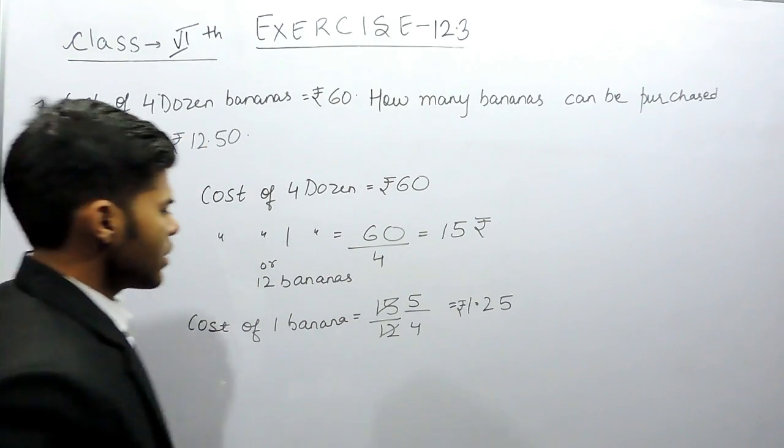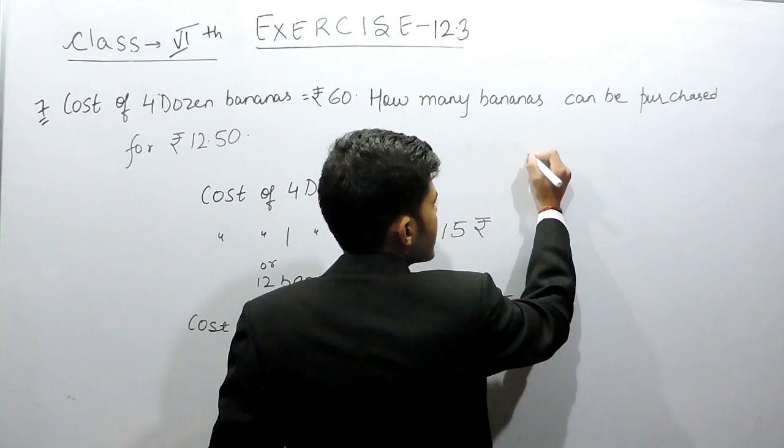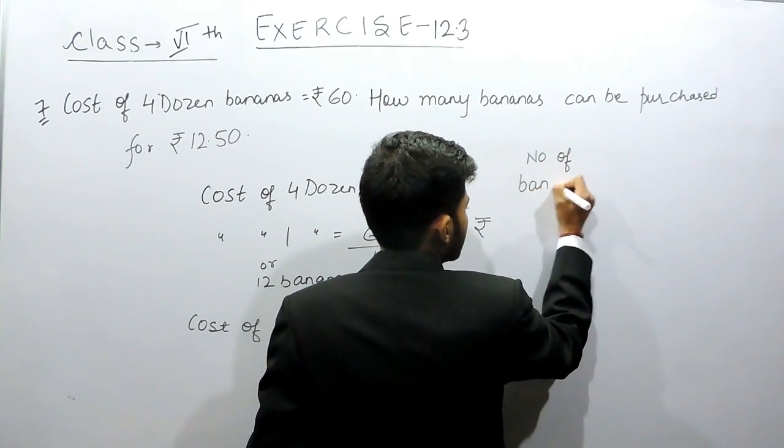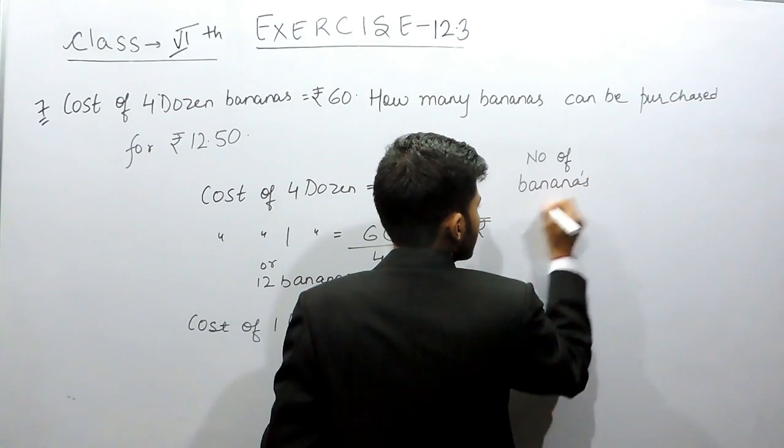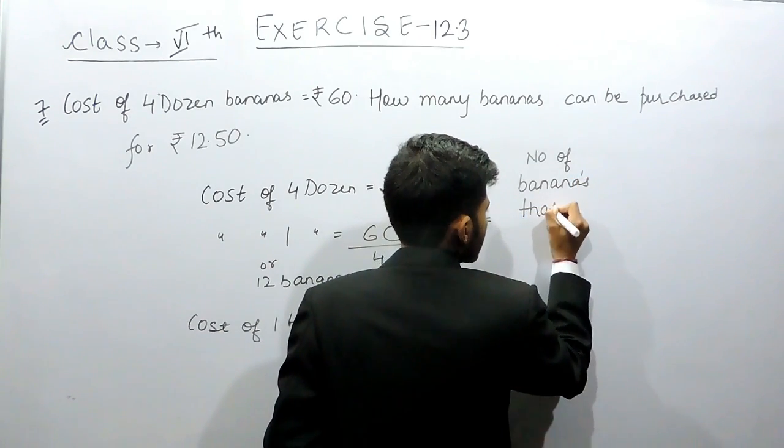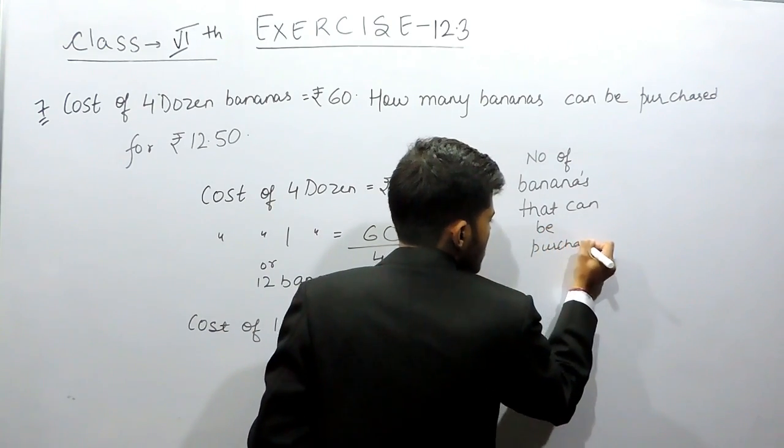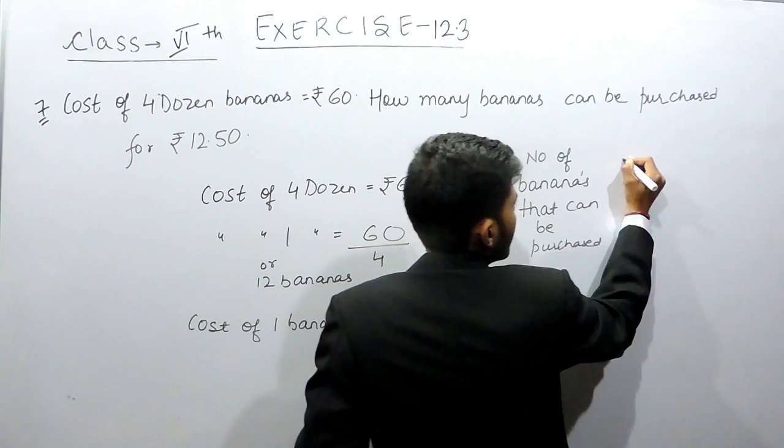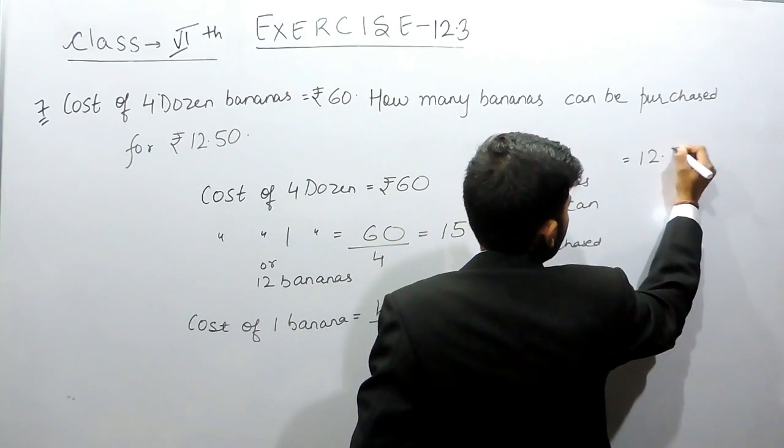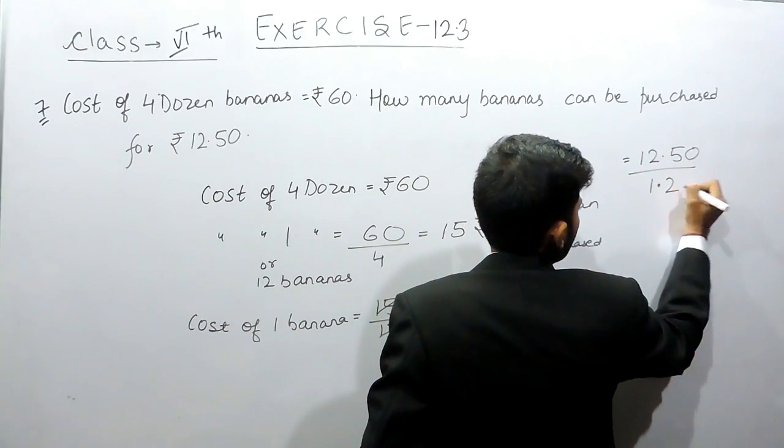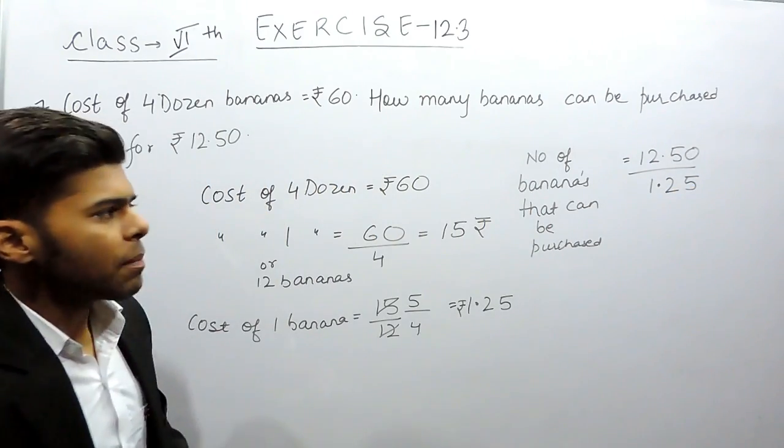So we have 12.50 rupees, so number of bananas that can be purchased will be equals to 12.50 by 1.25. Now why we divided this? We will remove the decimal.